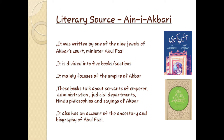Ain-i-Akbari is divided into five books. The first book deals with the imperial household. The second book deals with the servants of the emperor, the military, and the civil services. The third book deals with imperial administration. The fourth book gives information on Hindu philosophy, science, social customs, and literature. The fifth book contains the sayings of Akbar.